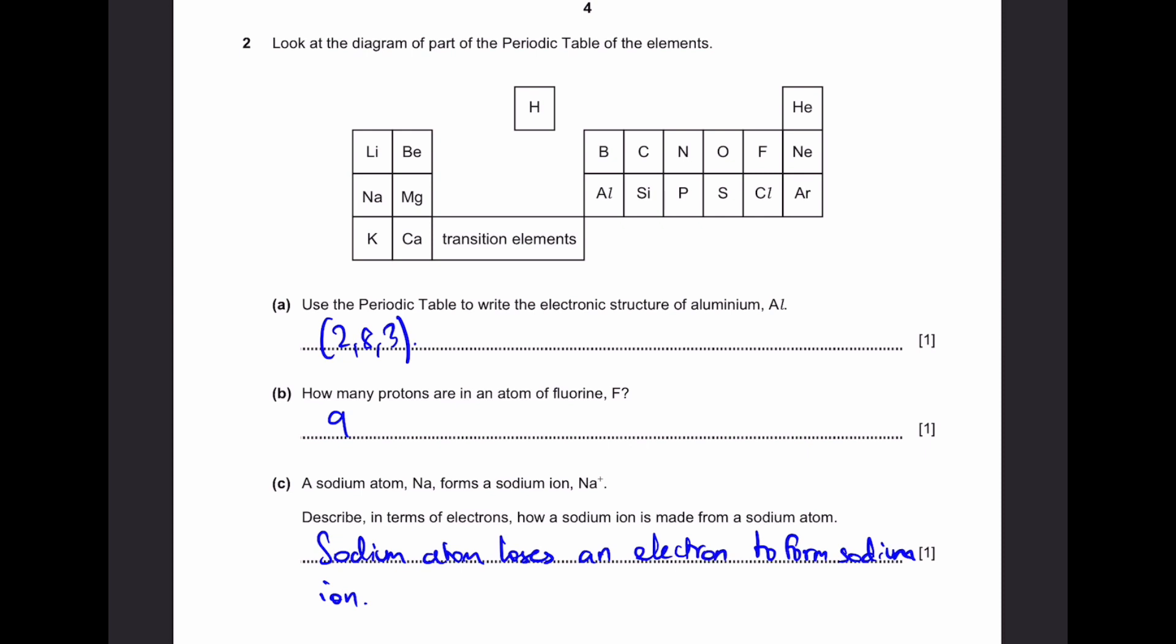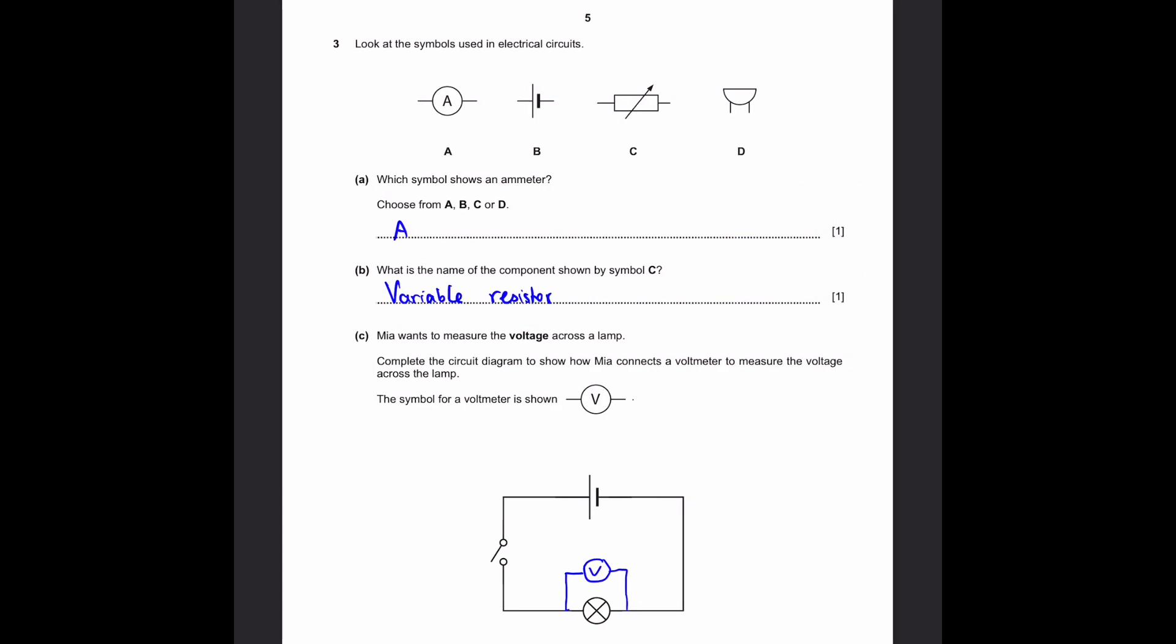Part C: A sodium atom Na forms a sodium ion Na+. Describe in terms of electrons how a sodium ion is made from a sodium atom. This is actually kind of simple. The sodium atom loses an electron to form a sodium ion because it has only one electron in its outer shell.